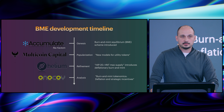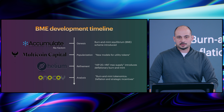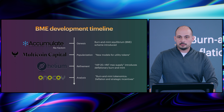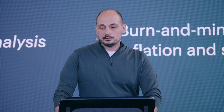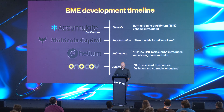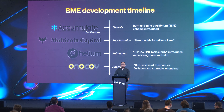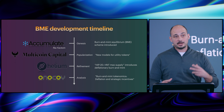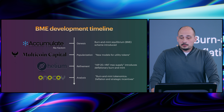Before going into more detail, let me give a brief history of burn and mint. The genesis was a project called Factom, which introduced this back in 2016. It was later popularized through an article by Kyle Samani of Multicoin called 'New Models for Utility Tokens.' It was further refined with HIP-20, a Helium improvement proposal that introduced a deflationary burn and mint — not minting a consistent amount of tokens, but decreasing the mint rewards to contributors over time.